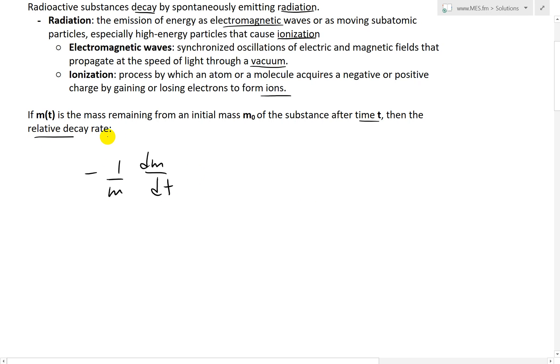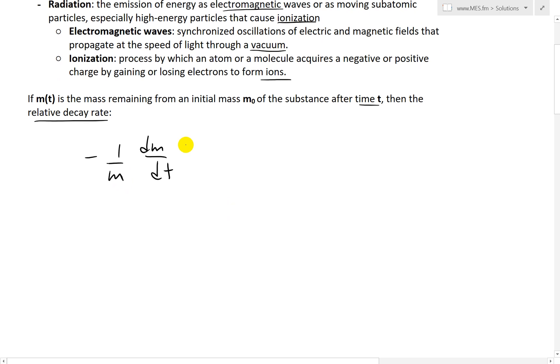This is the relative decay rate because, as I explained before, dm/dt is the decay rate of the mass of that substance. When you divide it by the actual mass, it's a relative decay rate based on whatever mass it is. And it's been shown that this is constant.